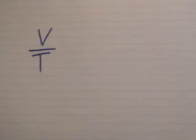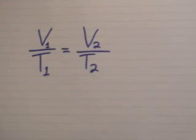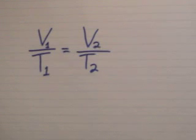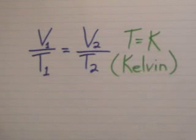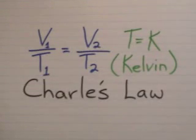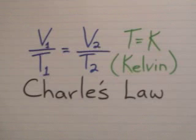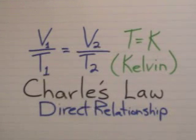That brings us to our next gas law involving volume and temperature. With an initial volume and temperature and a final volume and temperature, temperature must be measured in Kelvin. The unit used for volume doesn't matter as long as it remains the same on either side of the equal sign. You can solve for either volume or temperature given that pressure remains constant. This is Charles' Law — as volume goes up, so does temperature, and vice versa. This is a direct relationship.